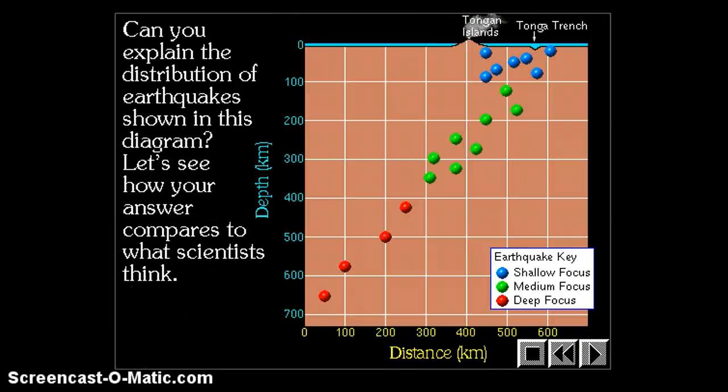Here's the completed data. Hopefully your graph looks similar to this graph. When you look at the position and depth of earthquakes, they definitely make a pattern. It's not a perfectly straight line, but it's not randomly scattered everywhere either. The shallow earthquakes all tend to be very near the trench. The moderate earthquakes tend to be right underneath the Tonga Islands, and the deepest earthquakes are actually on the other side of the Tonga Islands in comparison to the trench. Can you explain the distribution of earthquakes shown in the diagram? See if you can figure out what's happening here.